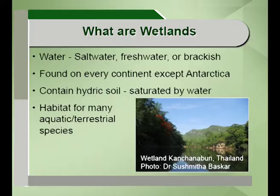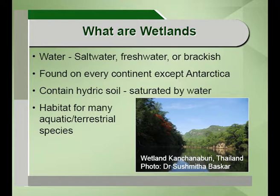The water in wetlands can be of three types: salt water, fresh water and brackish. They are found on every continent except Antarctica. The world's largest wetlands are found in the Pantanal, which straddles Bolivia, Brazil and Paraguay in South America. Most of the world's wetlands are found north of the equator between 50 and 70 degrees north latitude, and these are comprised of the peatlands.